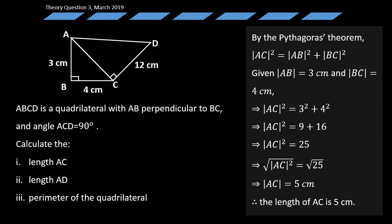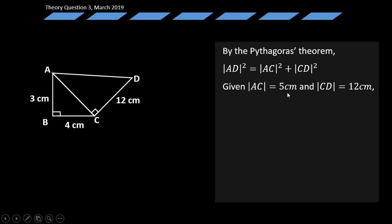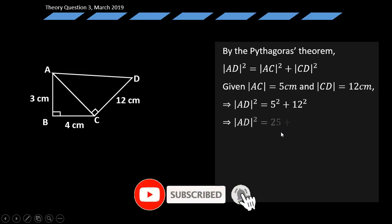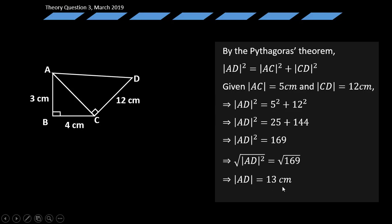For part II, by the Pythagorean theorem applied to triangle ACD, AD squared equals AC squared plus CD squared. AC was found to be 5 cm and CD is given as 12 cm. Substituting: AD squared equals 5 squared plus 12 squared, which gives 25 plus 144 equals 169. Taking the square root, the length of AD equals 13 centimeters.